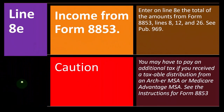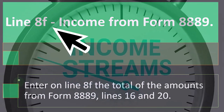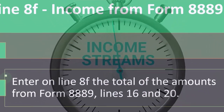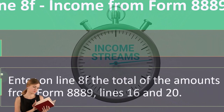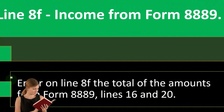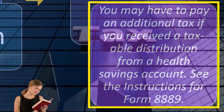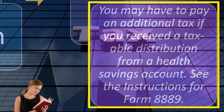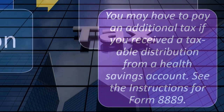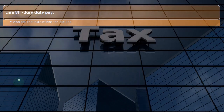You can see the instructions for Form 8853 for more detail. Line 8f — income from Form 8889. Enter on line 8f the total of the amounts from Form 8889, lines 19 and 20. Caution: you may have to pay an additional tax if you received a taxable distribution from a Health Savings Account. See the instructions for Form 8889 for more detail.